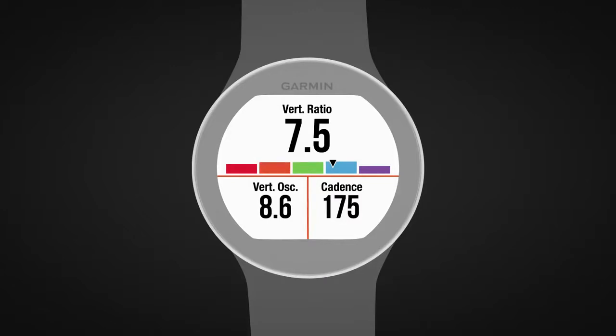The color gauge applies to the top metric. The position of the pointer on the gauge indicates how your value compares to other runners.